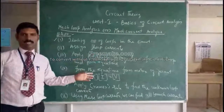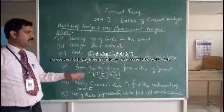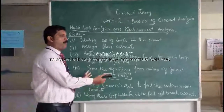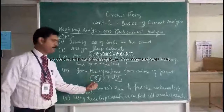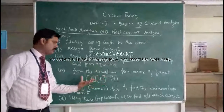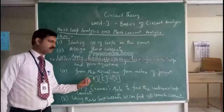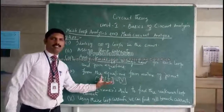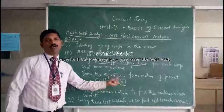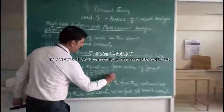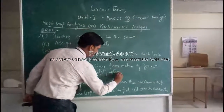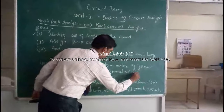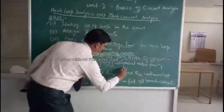The matrix method is very easy. Once you have the equations, you can put them in a proper format: a resistance matrix, which is a square matrix, an I matrix which is the current column matrix, and a B column matrix. This is called the general matrix form of mesh loop analysis.